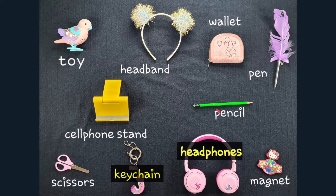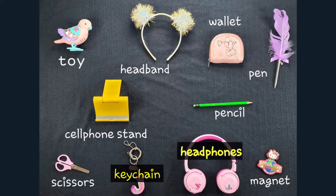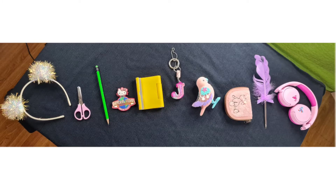The items are: headphones, pencil, ball pen, keychain, cell phone stand, magnet, wallet, and toy bird. We will arrange them side by side.